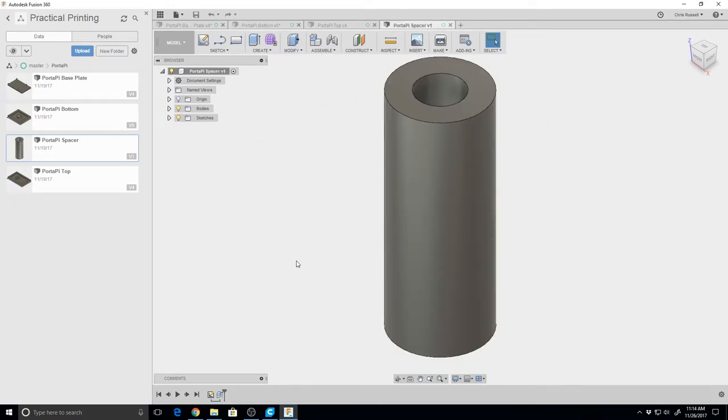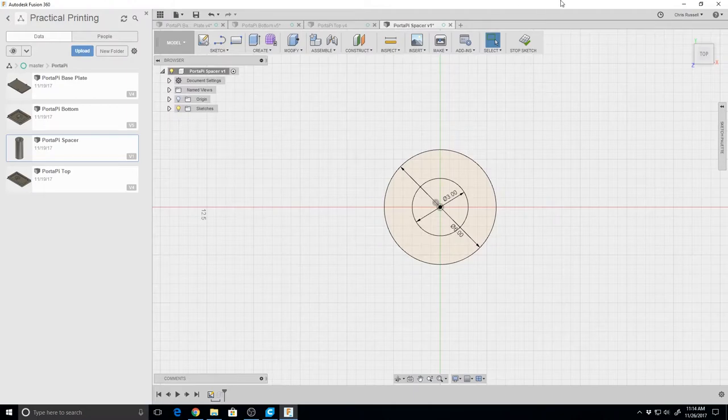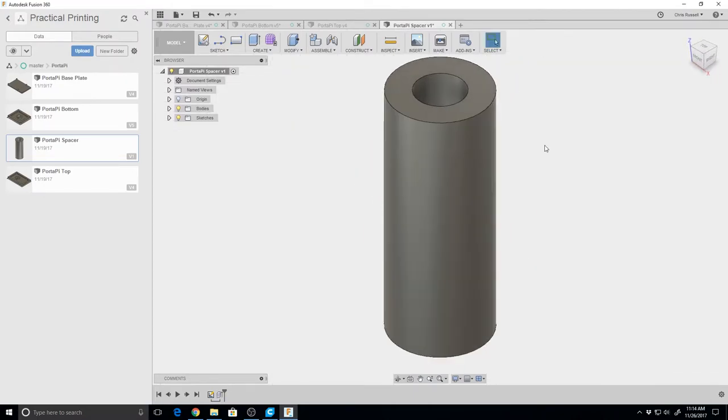Then of course the last piece was the spacer, was just a single sketch of two circles, and that was extruded up to the height that we wanted. Now let's go ahead and head over and I'll show you the quick assembly process on this.